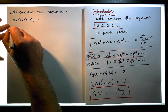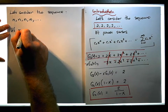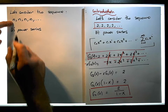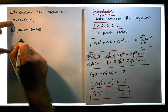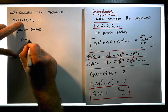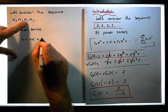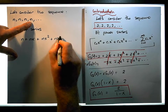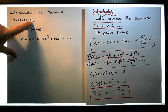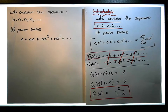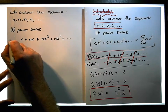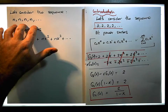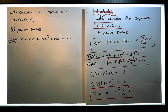Its power series is going to be: the first term is n, so it's going to be n plus n times x, plus n times x squared, plus n times x cubed, and all the way down. Let's call this g_n(x) — this is the power series for this constant sequence.